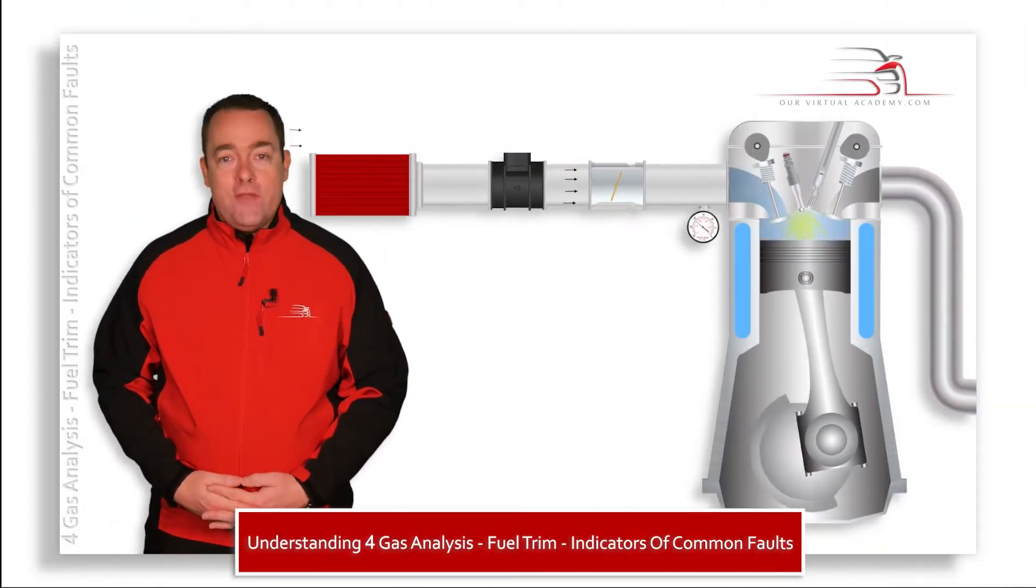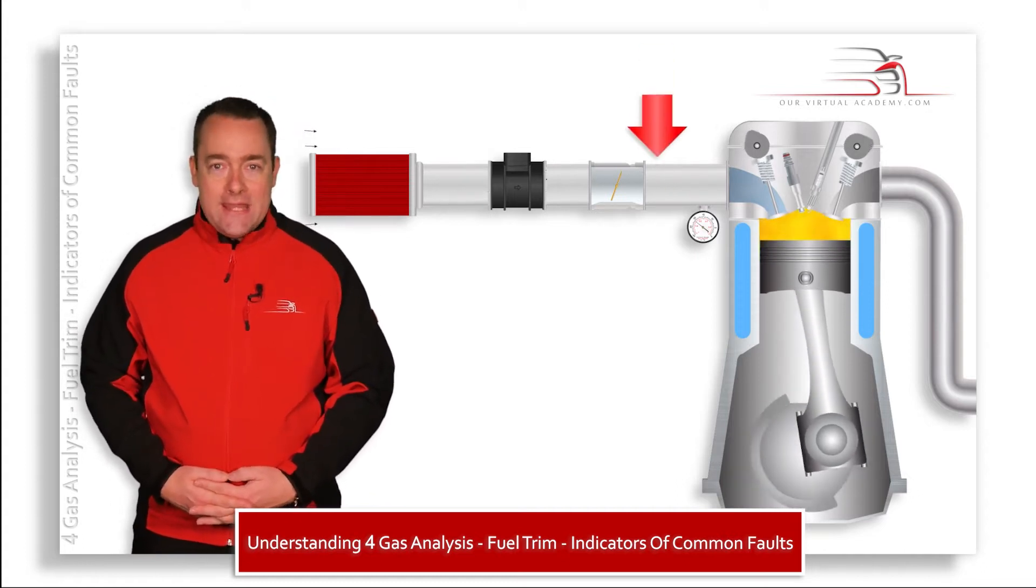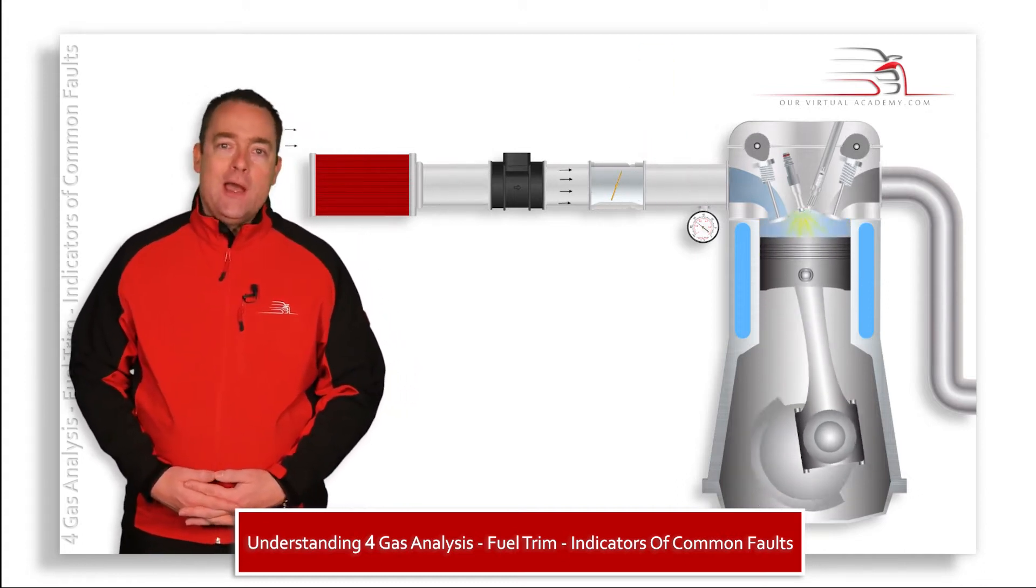In this first scenario, we've got a vehicle with a small air leak in between the throttle body and the inlet valve.